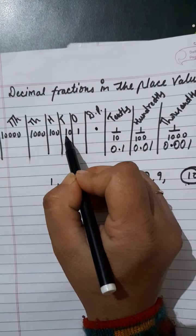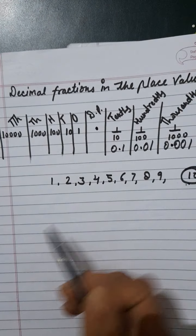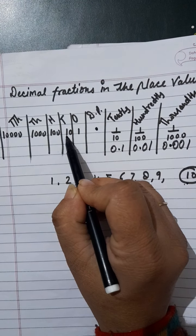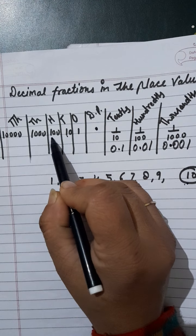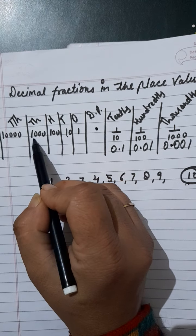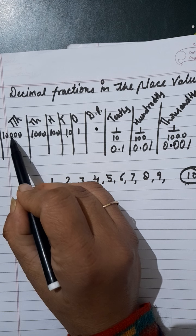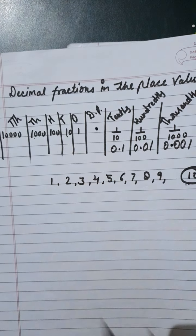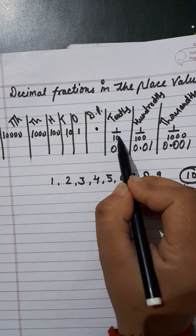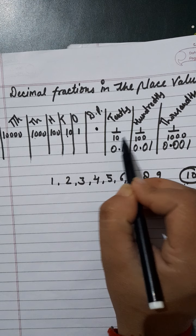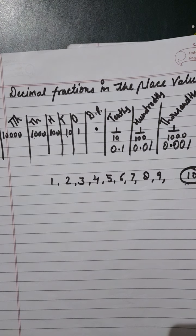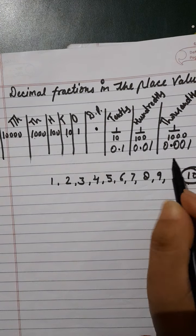In the tens place we have ten, hundreds place we have hundred, thousands place we have thousand, and ten thousand. Similarly, after the decimal we have one-tenth, one-hundredth, and one-thousandth.